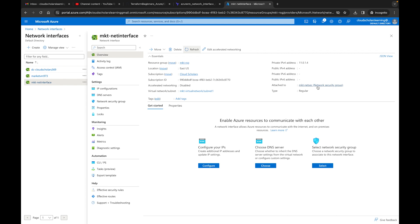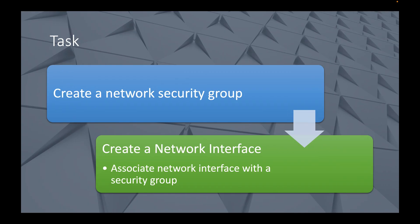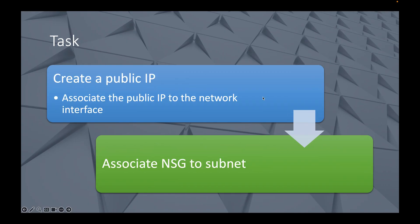I'm going to cut this video here — it's running about 15 minutes which is fine. In part two we're going to work on creating a public IP address, associating the public IP to our network interface, and associating our network security group to one or both of our subnets. I hope the information in this video was beneficial. My name is Kieran Tross — please subscribe, like, and share. My goal here at Cloud Scholars is to get you from scholar to consultant, and from consultant to expert. Thank you and see you next time.